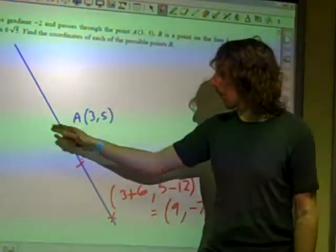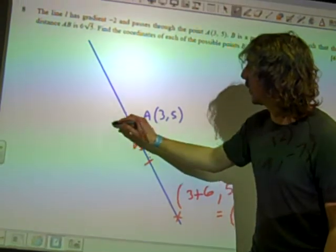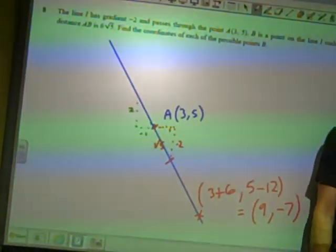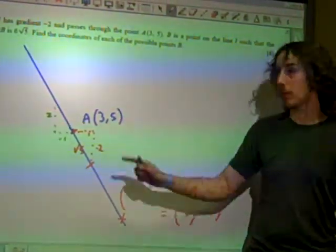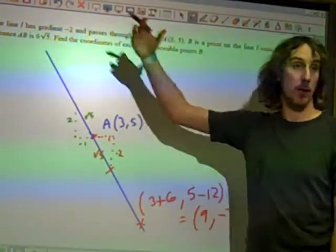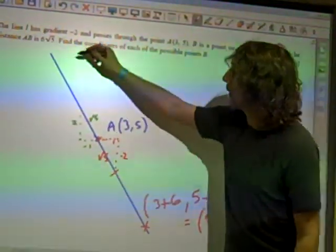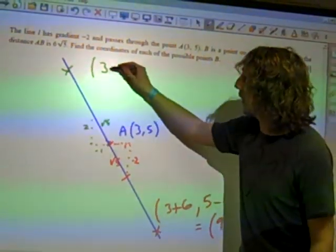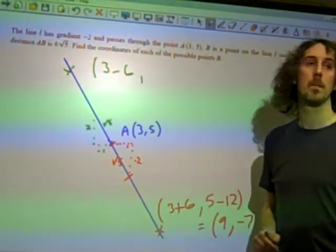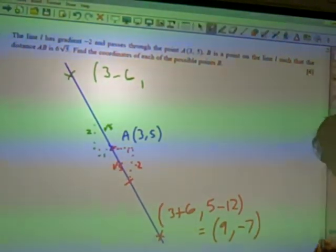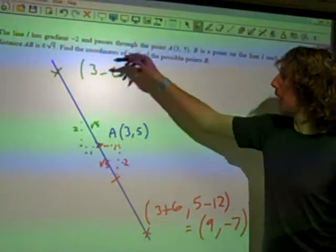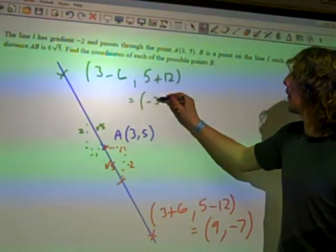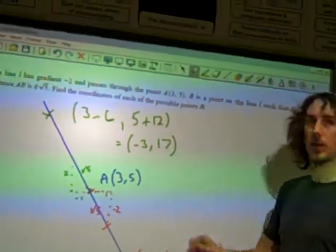In the other direction, if I go 1 unit that way, I go 2 units that way. Now also that gives me the same gradient of minus 2. Every time I do that, I go a distance of root 5. I want to go 6 root 5, so I need to go 6 in that direction. So this point up here is going to be coordinates 3, I'm going to go 6 in that way, so it's 3 minus 6. And in my other direction, I've got to go up 12, so I'm going to do 5 plus 12. So that gives me the point (minus 3, 17).